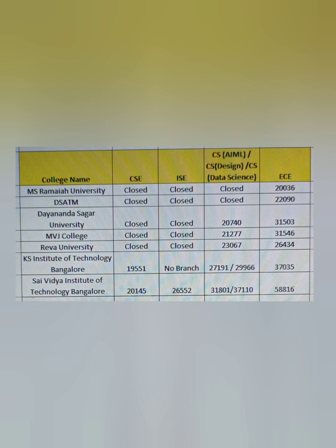The first round cutoff is very important to get a mock allotment. As you can see on the sheet: ECE at MMS Ramaiah closed at 20,000, DSATM at 22,000, and DSU at 31,000 — all three have computer science closed. MVJ College of Engineering, a good option in Bangalore, has specialization branches closing at 21,000 and ECE at 31,000. KS Institute of Technology had computer science close at 19,511, very close to 20,000, with ISE not available and CSE specializations up to 27,000–29,000.